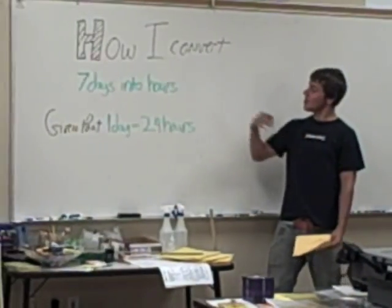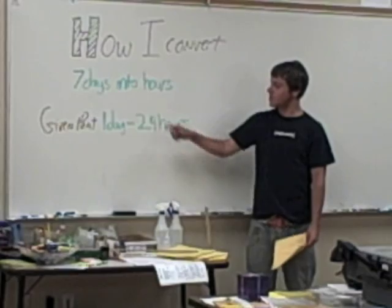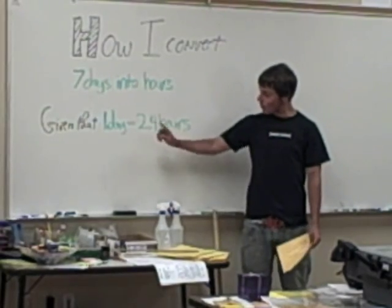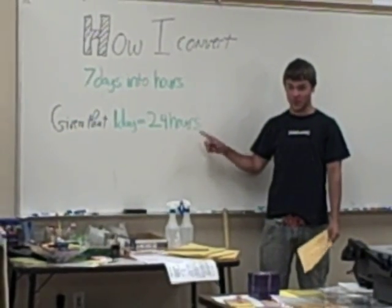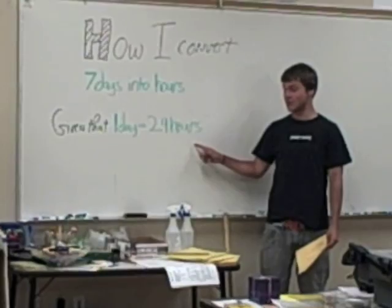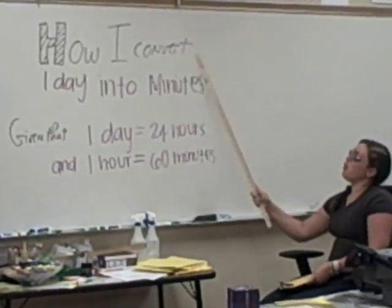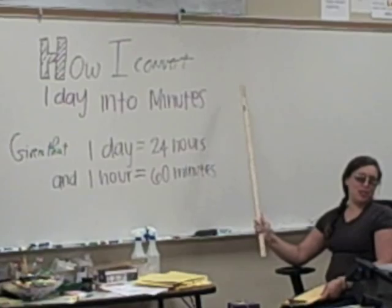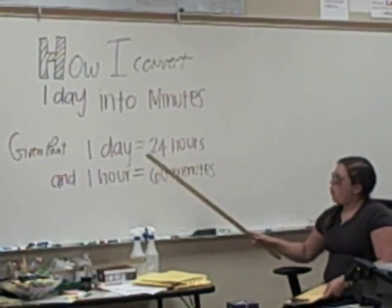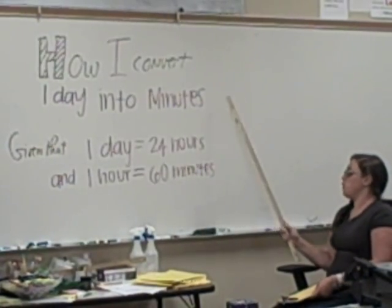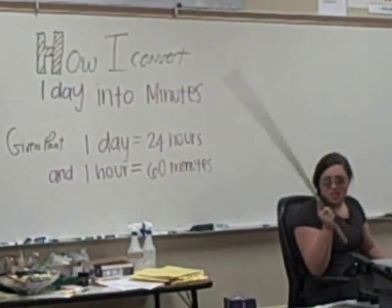How I convert 7 days into hours, given that 1 day equals 24 hours and 24 hours equals 1 day. How I convert 1 day into minutes, given that 1 day equals 24 hours and 1 hour equals 60 minutes.